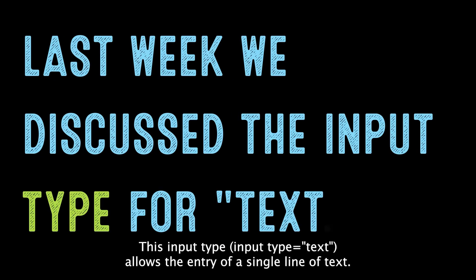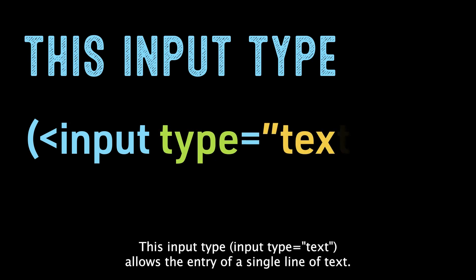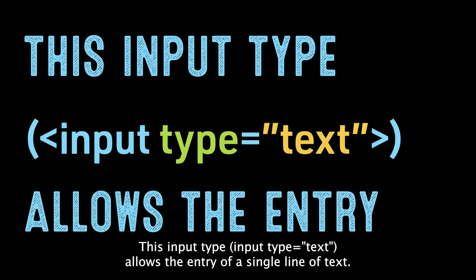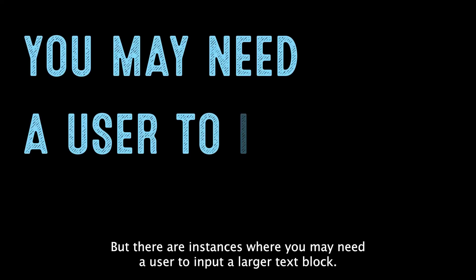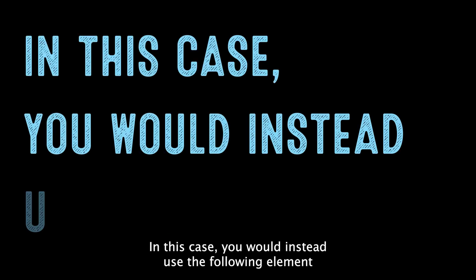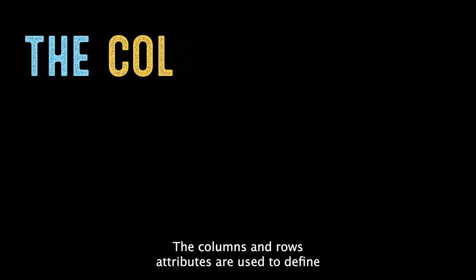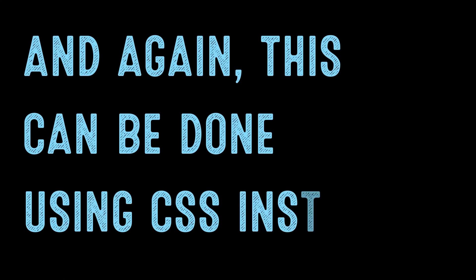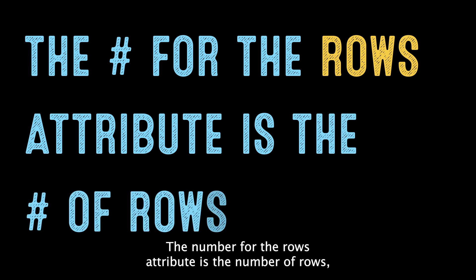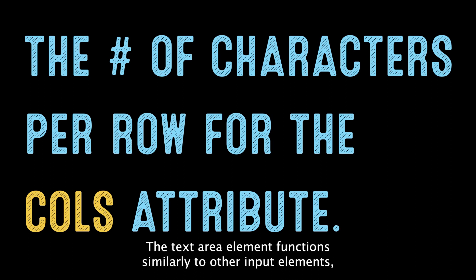This week we discussed the input type for text. This input type — input type equals text — allows the entry of a single line of text. But there are instances where you may need a user to input a larger text block. In this case, you would instead use the textarea element. The columns and rows attributes are used to define the area of text when the browser first loads the element, though this can also be done using CSS. The number for the rows attribute is the number of rows, but it is the number of characters per row for the columns attribute.